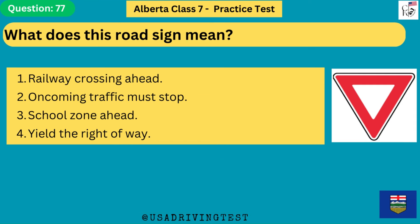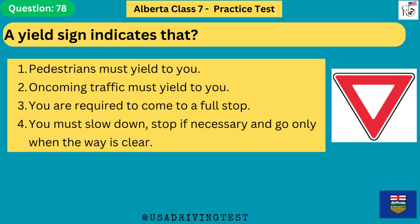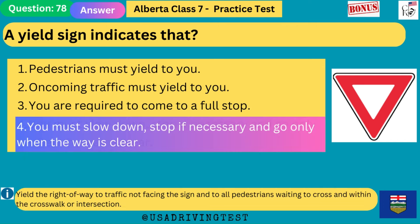What does this road sign mean? 1. Railway crossing ahead. 2. Oncoming traffic must stop. 3. School zone ahead. 4. Yield the right-of-way. The answer is 4: yield the right-of-way. Yield the right-of-way to traffic not facing the sign and to all pedestrians waiting to cross and within the crosswalk or intersection. A yield sign indicates that you must slow down, stop if necessary, and go only when the way is clear.